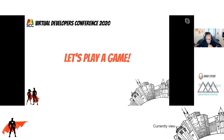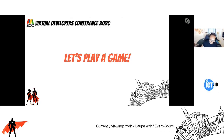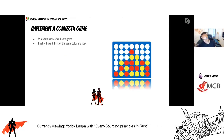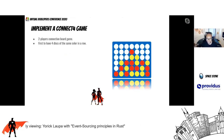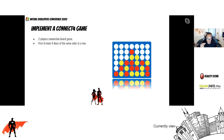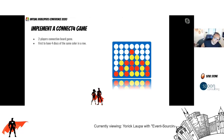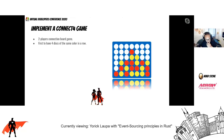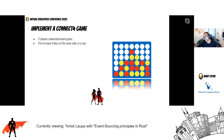Now we have introduced the keywords of event sourcing. I propose to implement a game, and I decided to pick a famous one — Connect4. Connect4 is a two-player connection board game in which players choose a color and take turns dropping colored disks into a seven-column, six-row vertically suspended grid. The pieces fall straight down, occupying the lowest available space within the column. It's a great example to get your feet wet when you want to understand event sourcing.